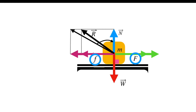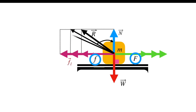As we keep on increasing the applied force, the frictional force also keeps increasing until it reaches the limiting frictional force Fl. Consequently, the resultant contact force also reaches the limiting resultant contact force Rl.